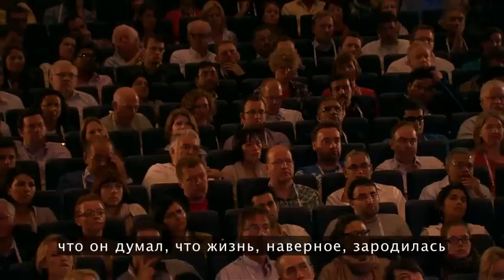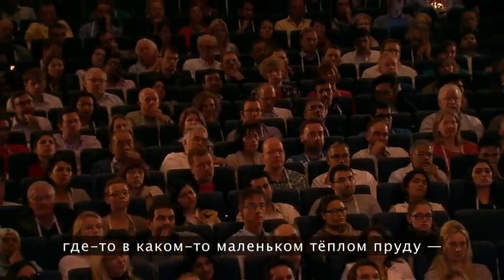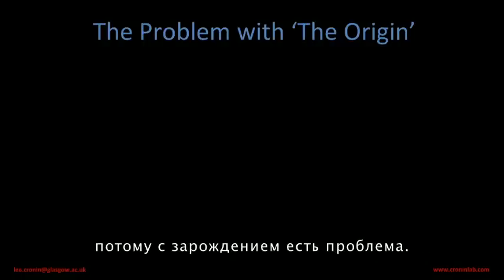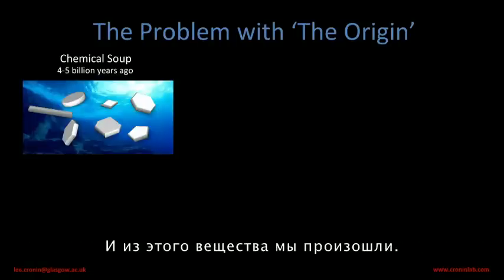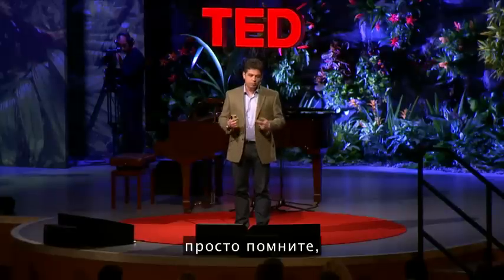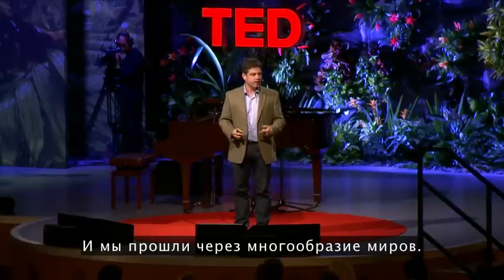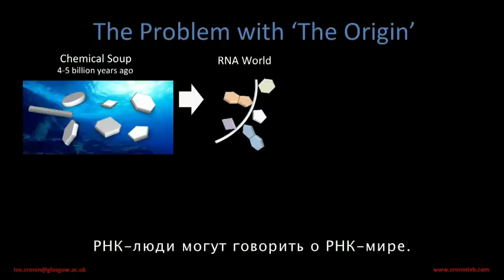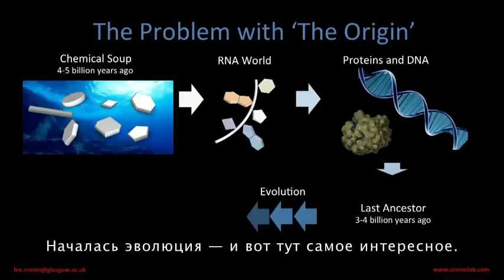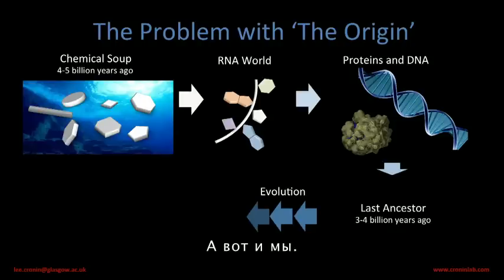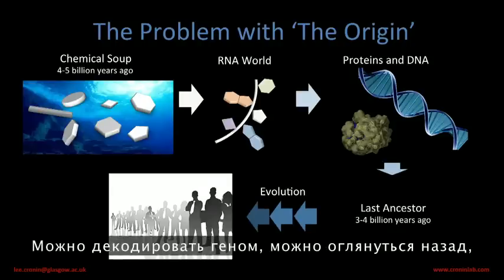Darwin himself mused in a letter to a colleague that he thought that life probably emerged in some warm little pond somewhere — maybe not in Scotland, maybe in Africa, maybe somewhere else. But the real honest answer is we just don't know. There is a problem with the origin. If you imagine way back, four and a half billion years ago, there is a vast chemical soup of stuff. And from this stuff, we came. We went through a variety of worlds — the RNA world, somehow got to proteins and DNA, then got to the last ancestor. Evolution kicked in. And here we are.